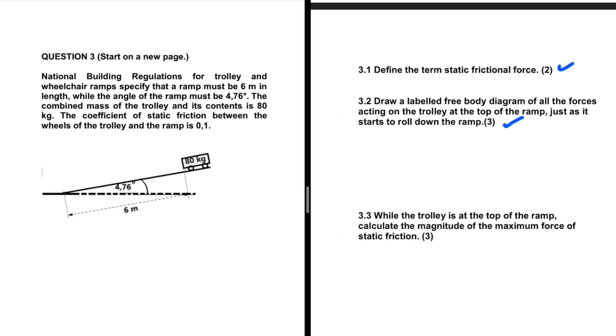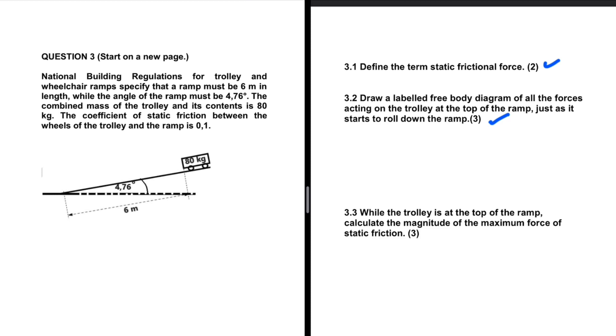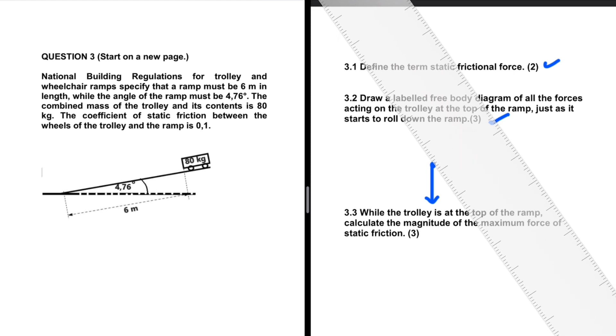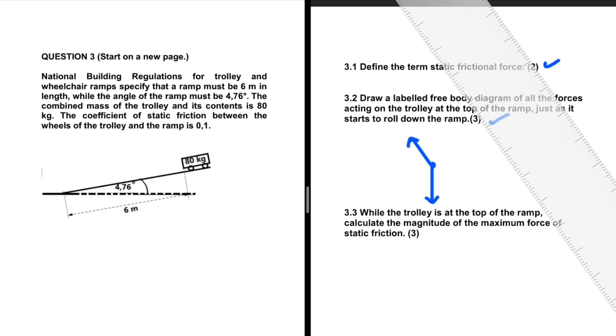How do we then draw our free body diagram? Before we even start thinking about anything else, we know for sure that we have the weight. The weight points straight downwards, regardless of the situation you have. The object is resting on a surface, so we shall have a normal force perpendicular to the surface. So there we go.